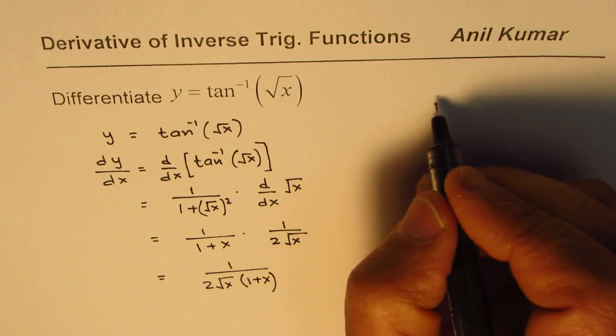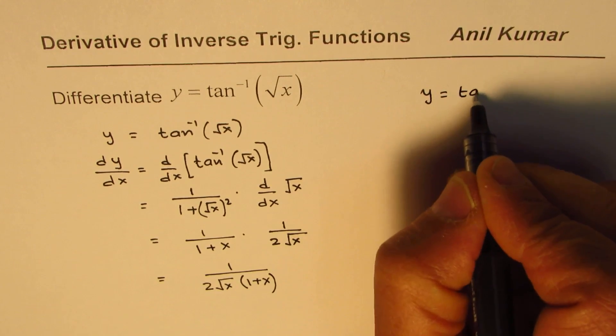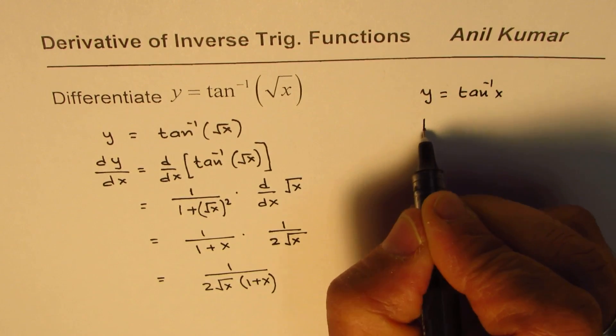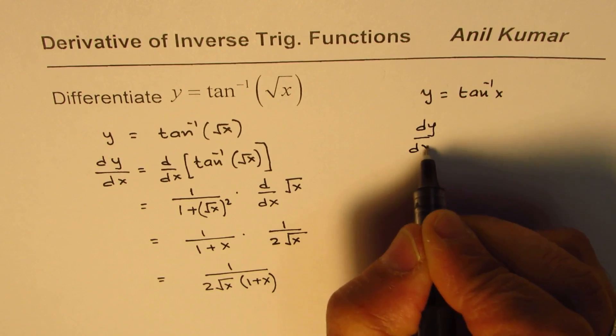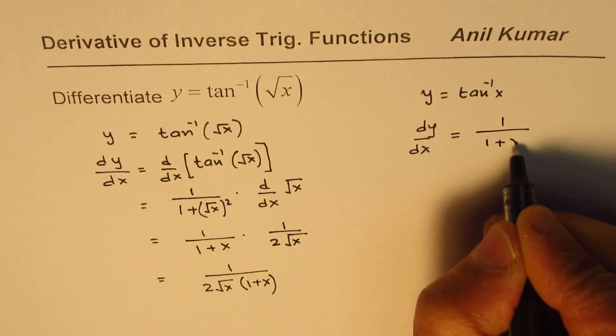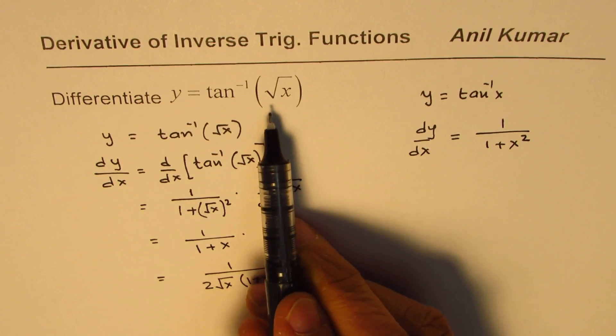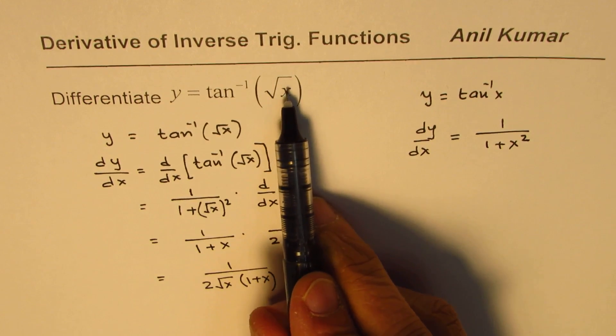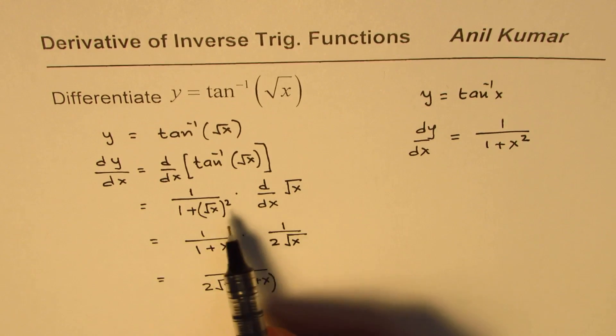The formula used here was, let's say we have y equals tan inverse x, then dy/dx is equal to 1 over 1 plus x squared. So here the argument was square root of x, so we replace that x with square root of x.